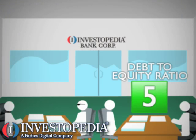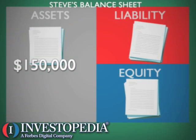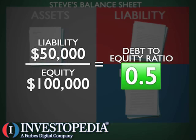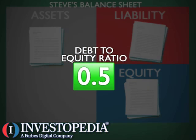Super Steve and his loan officer do the same thing. After reviewing Steve's balance sheet, they note that Super Steve has assets of $150,000, liabilities of $50,000, and equity of $100,000, leaving his debt to equity ratio at .5.